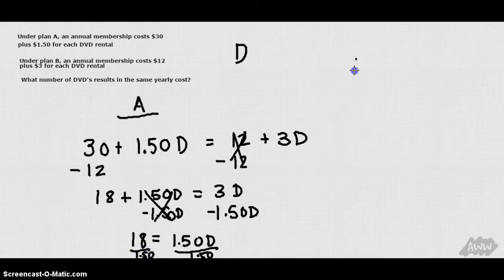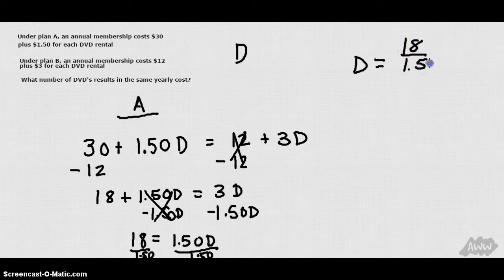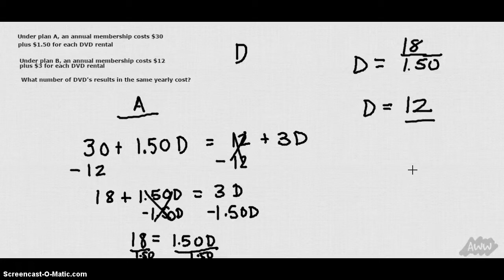We get the number of DVDs is equal to $18 divided by $1.50. We're going to find that 12 DVDs is the number that you would have to rent for both plans to equal the same cost. So there are some examples for solving equations with variables on each side.